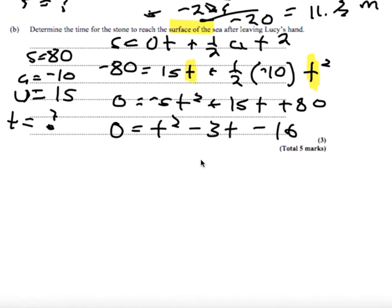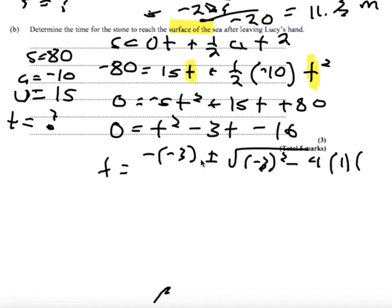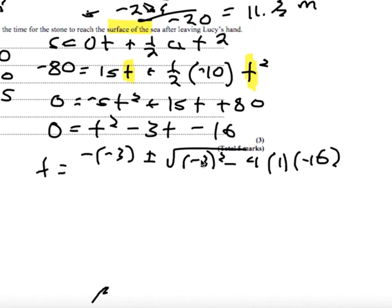Now this quadratic doesn't appear to factorize. I don't think that there's anything that I can multiply together to give me 16 and add or subtract to give me negative 3. Not a whole number anyway. So I'm going to need the quadratic formula. t is equal to negative b plus or minus the square root of b squared minus 4ac all over 2a.